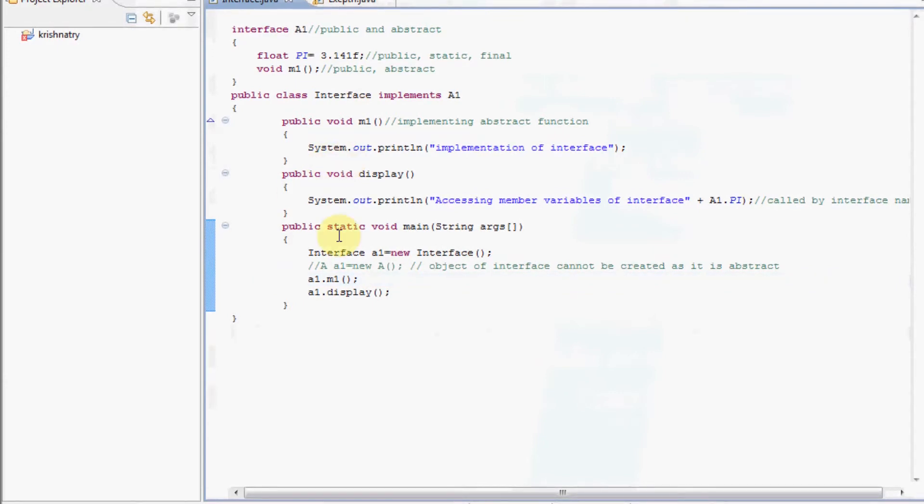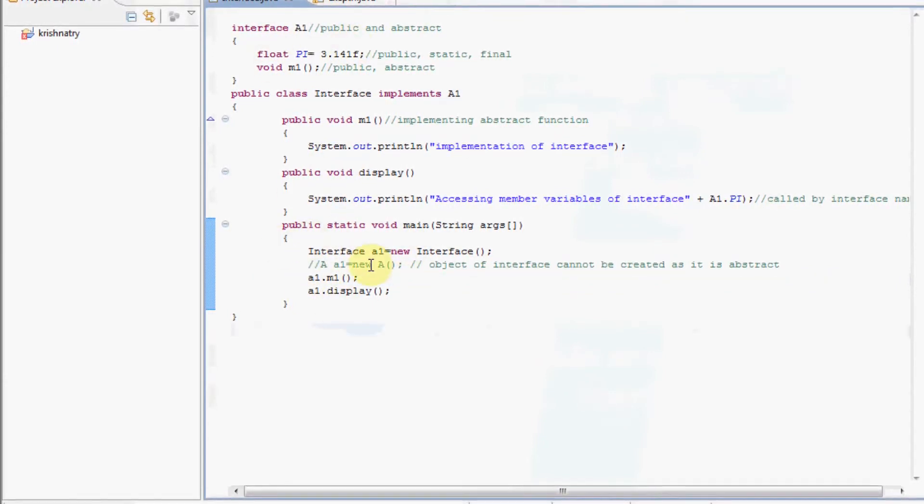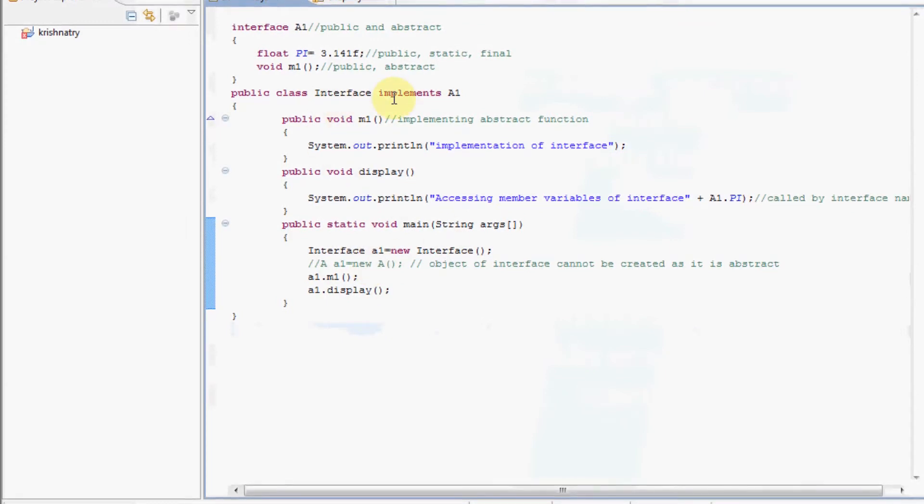We have accessed m1 of interface a1 through an object of interface. Now let me run this program.